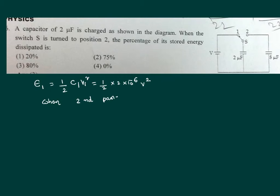When it is further connected to the second part, loss of energy is half C₁C₂ by C₁ plus C₂ of V square. This is because these two capacitors act as if they are in series combination. Therefore, the effective capacitance is C₁C₂ by C₁ plus C₂.